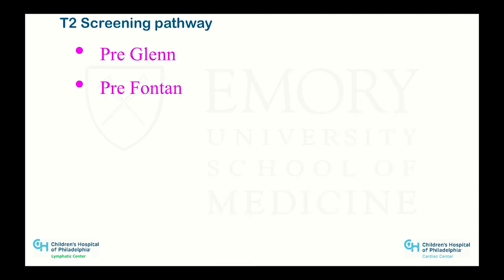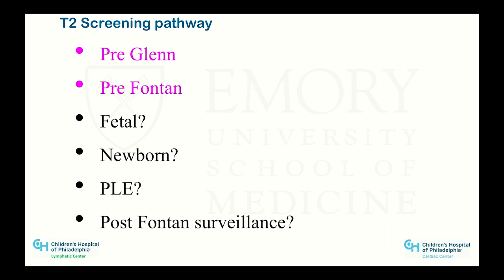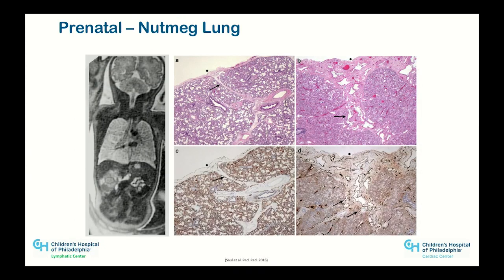Within the type 4 group, there is a subgroup we are now identifying who should never undergo single ventricle palliation — we move them directly toward transplant. For others we are doing more and more interventions to see if we can get them through. We now screen all patients with T2 imaging pre-Glenn and pre-Fontan. The question is whether we can screen them even earlier — as fetuses, newborns — and what should post-Fontan surveillance look like.